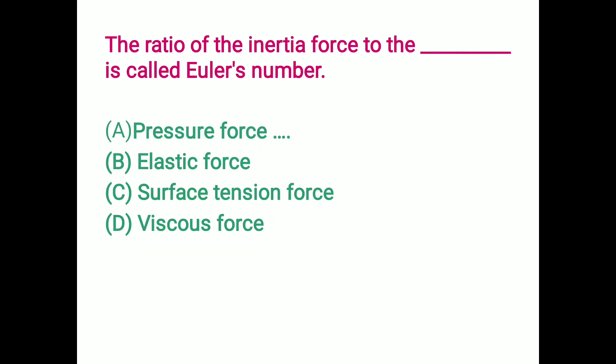The ratio of inertia force to pressure force is called Euler's number. The ratio of inertia force to elastic force is called Mach number. The ratio of inertia force to viscous force is called Reynolds number. The ratio of inertia force to gravitational force is called Froude number. According to this question, option A is the correct answer.